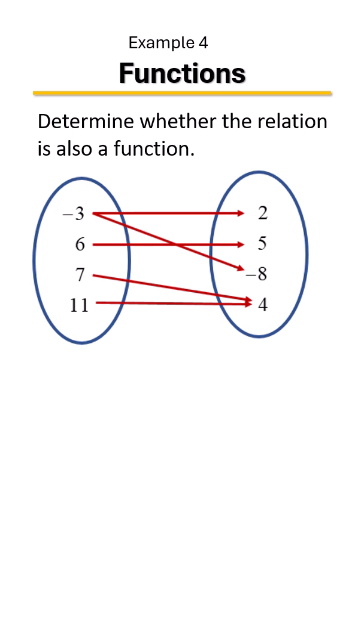Remember, the first column represents your X values and the second column represents your Y values. So you just follow the arrows. For example, your first ordered pair is negative three comma two, then you have negative three comma eight, then you have six comma five.